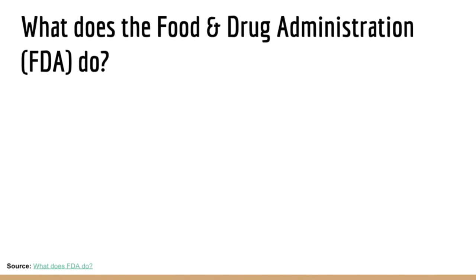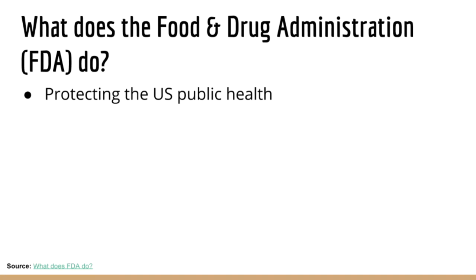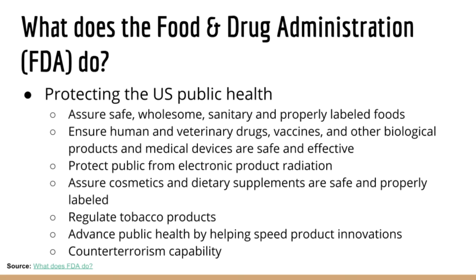So what does the FDA do? Since the Food and Drug Administration is a regulatory agency under the U.S. Department of Health and Human Services, its foremost mission is to enhance and protect the health and well-being of all Americans. The FDA achieves this mission by ensuring the safety, efficacy, and security of human and veterinary drugs, biological products, and medical devices, and by ensuring the safety of the United States' food supply, cosmetics, and products that emit radiation.